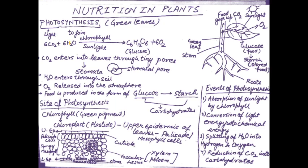Today we are going to discuss the topic nutrition in plants. Plants, as we all know, are autotrophic in nature — they derive their food on their own. The process by which plants obtain their food is known as photosynthesis.